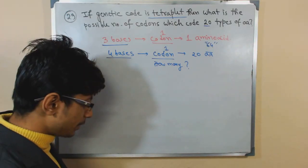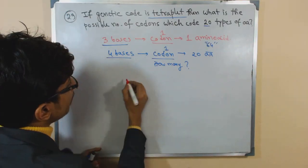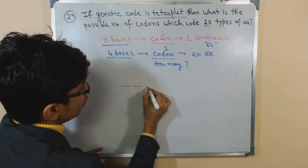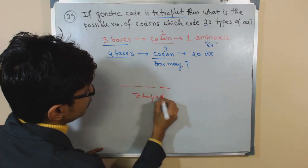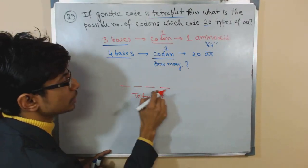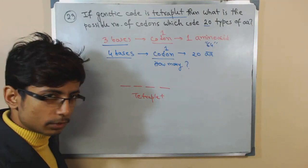Now in all these types of questions, the only thing you need to know is the probability. And the idea is that for a tetraplate codon, there will be four positions for producing that codon.